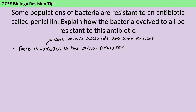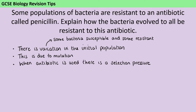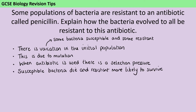This genetic variation has come about as a result of mutations. In order for evolution to happen, there has to be something external meaning that some individuals are more likely to survive and some are more likely to die — we call this the selection pressure. So when someone starts taking penicillin, that gives us a selection pressure, and our susceptible bacteria die off quite quickly while the resistant bacteria are more likely to survive.